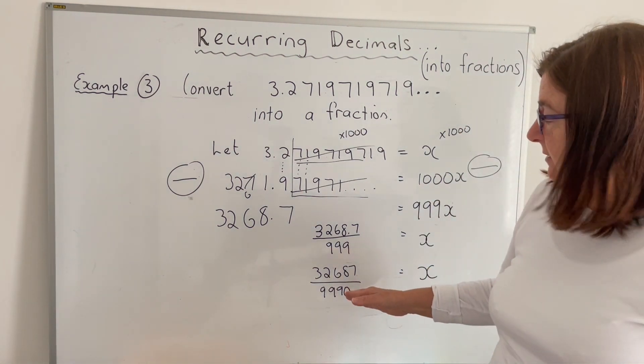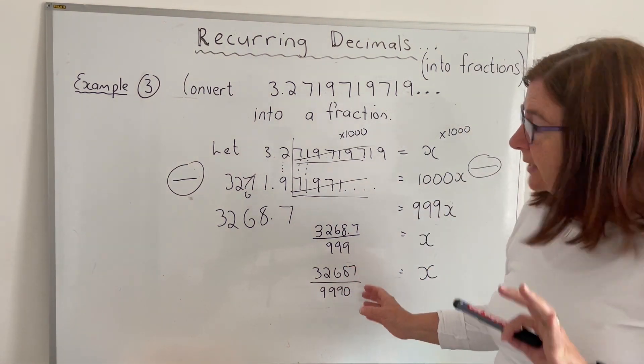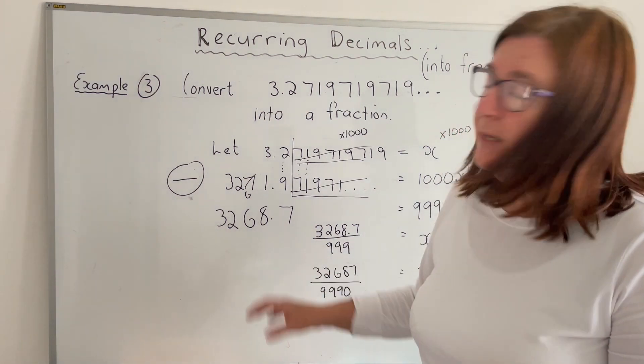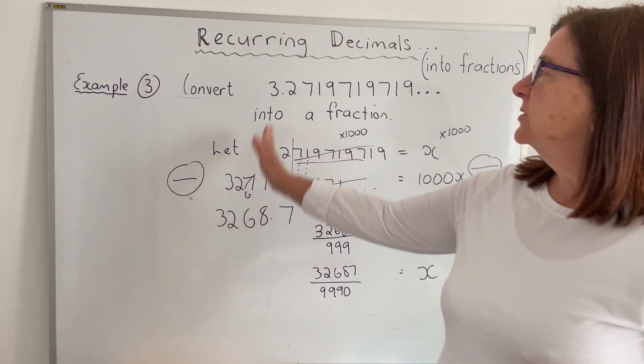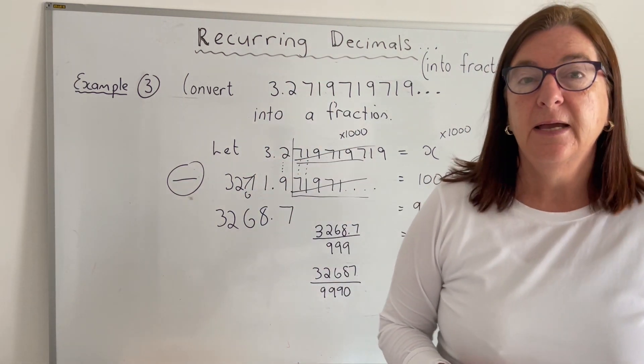That is the fact. You try and simplify it. Does it become simpler? No, it doesn't. But if I divide that into each other and I convert it to a decimal, it's going to give me back my original. So this long recurring decimal as a fraction is 32687 over 9990.